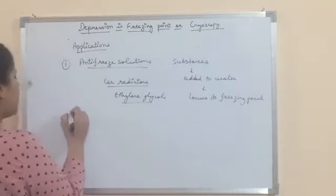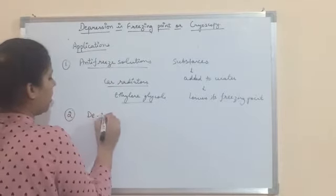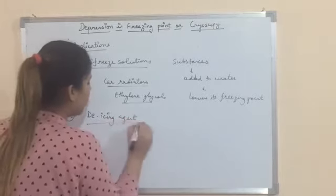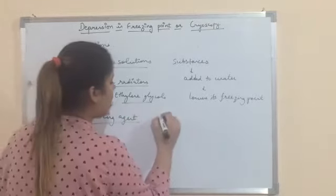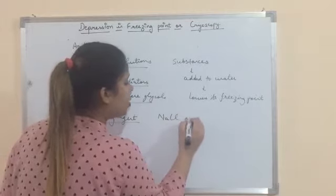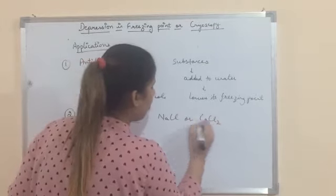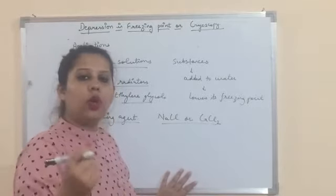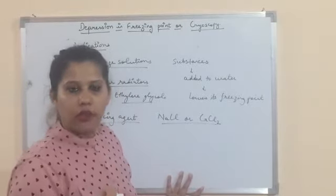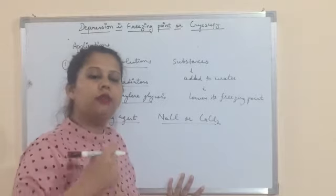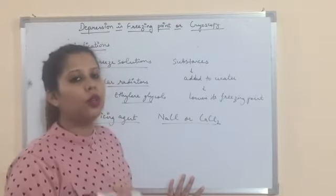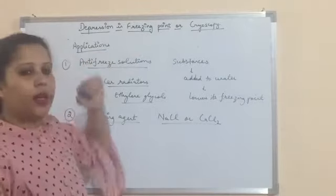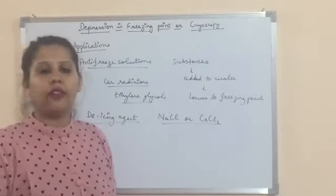Second, in de-icing agents, such as NaCl or calcium chloride, which when sprinkled on snow lower the freezing point of the snow and help in melting the snow from the roads. This is how we use the property of depression in freezing point in our daily life.